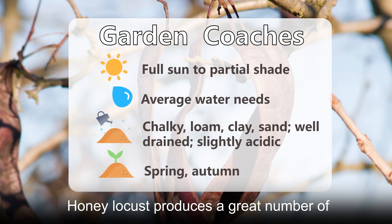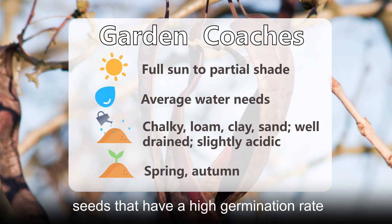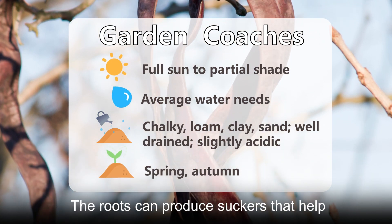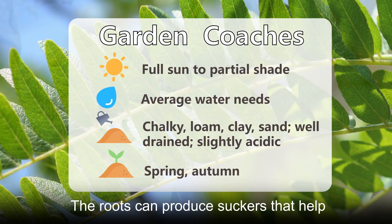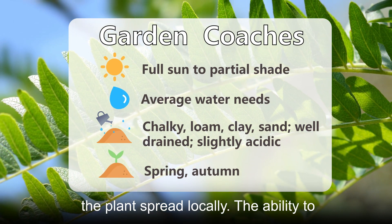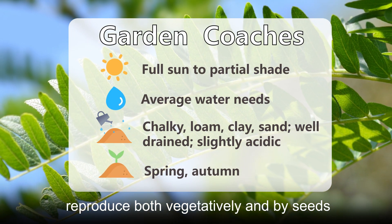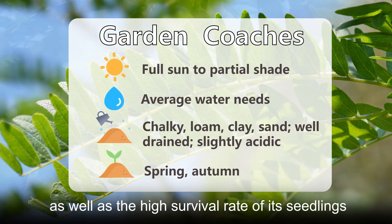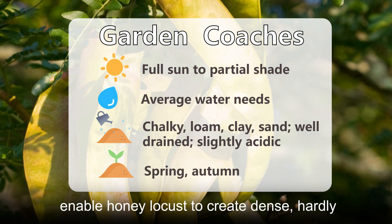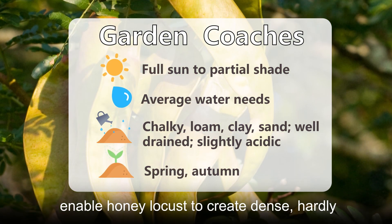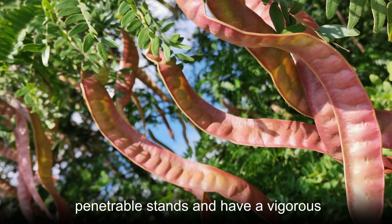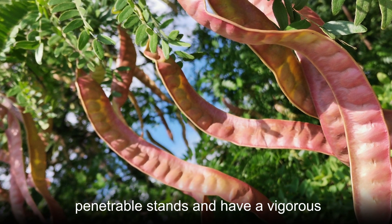Honey locust produces a great number of seeds that have a high germination rate. The roots can produce suckers that help the plant spread locally. The ability to reproduce both vegetatively and by seeds, as well as the high survival rate of its seedlings, enable honey locust to create dense, hardly penetrable stands and have a vigorous spread.